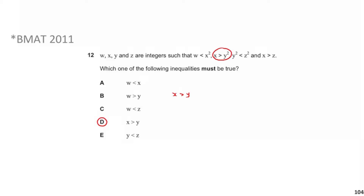You can also verify this for negative values: if y = −5 and x = 29, then 29 > (−5)² = 25, and 29 > −5. With 'must be true' questions, if you can show it holds for both positive and negative examples, you can be confident it's the right answer.